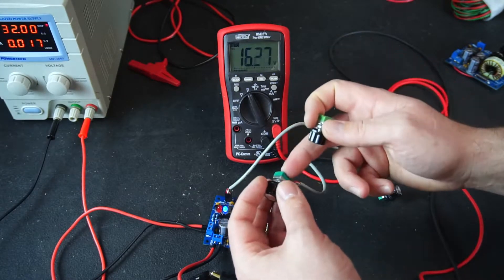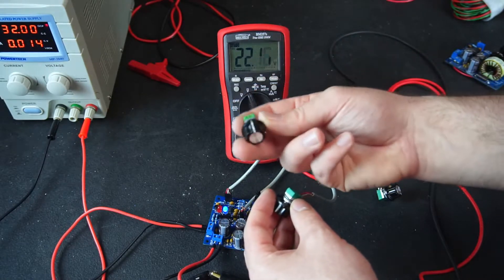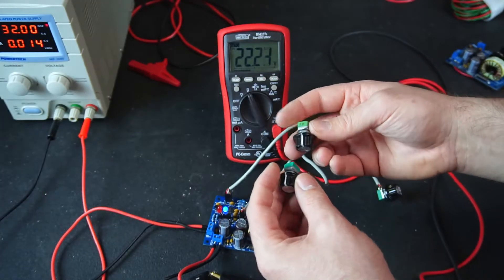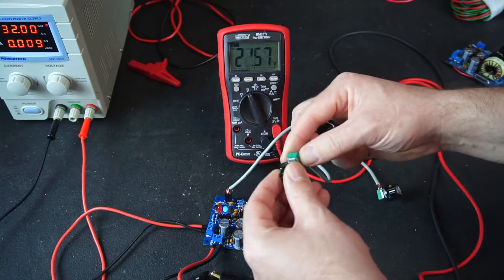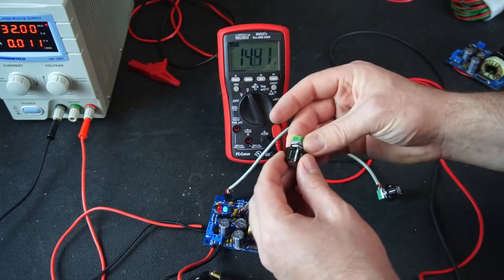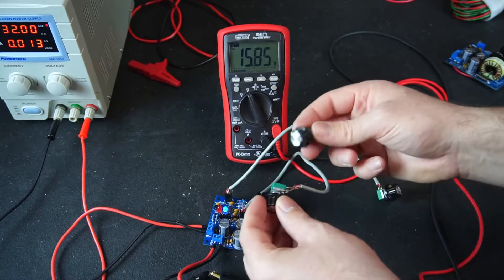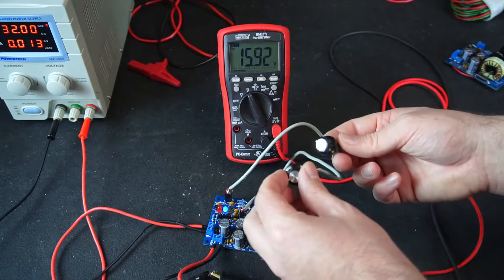So this is a 10k potentiometer and I want to put this 1k potentiometer in series with it so that we've got one potentiometer for coarse adjustment and then one for fine adjustment just for fine tuning. So I'm going to do that now and we'll see if it works.